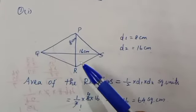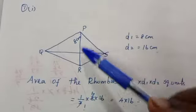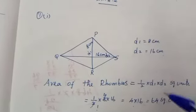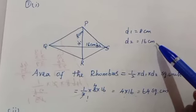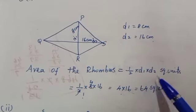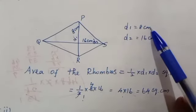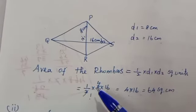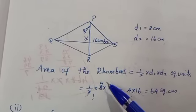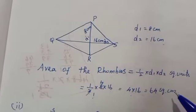First problem: from the given diagram, d1 is equal to 8 centimeter, d2 is equal to 16 centimeter. Area of the rhombus equals 1/2 into d1 into d2. Substituting: 1/2 into 8 into 16. After cancelling, we have 4 into 16 equals 64 square centimeter.